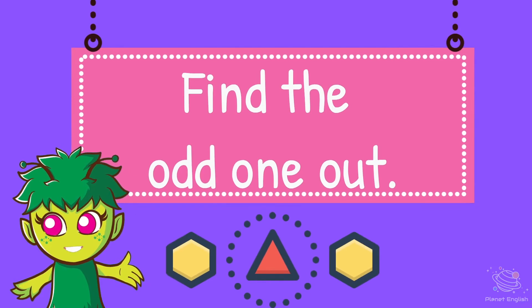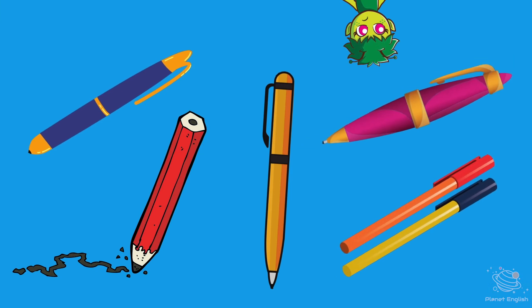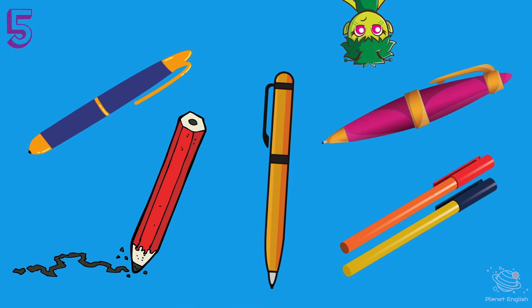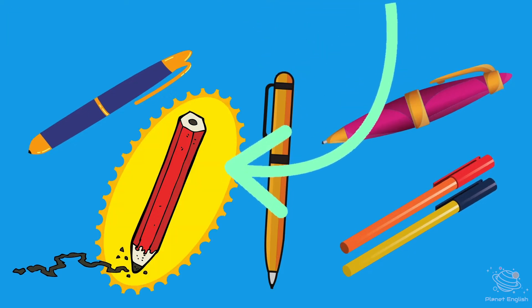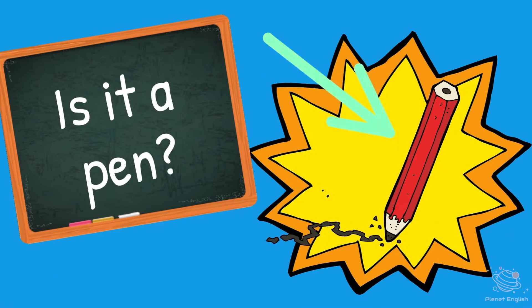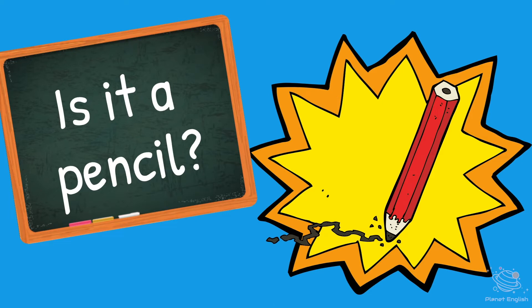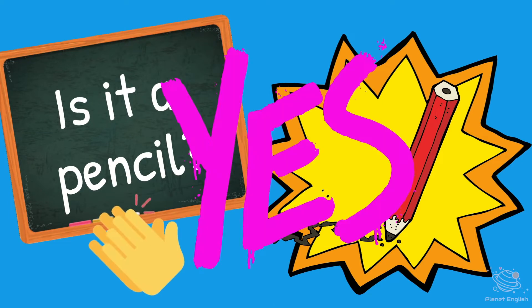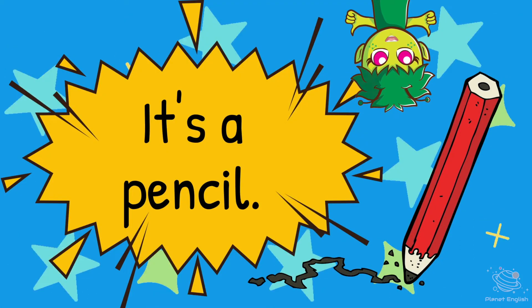Now find the odd one out. Where is the odd one out? 5, 4, 3, 2, 1. Is it a pen? No! Is it a pencil? Yes! Well done! It's a pencil!